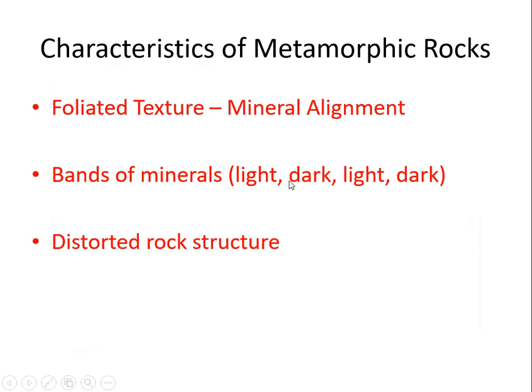So what else do we look for? Something we call foliated texture. It's a lot like having play-doh between your hands and then squeezing the play-doh. That play-doh would squeeze between your fingers. The minerals in the rocks start to align themselves based on the compressional forces, the squeezing of the rock, and the minerals start to become almost layered or aligned in appearance. This can create bands of minerals where we see streaks of light minerals like quartz alternating with dark minerals like biotite mica. This gives the rock a distorted rock structure.